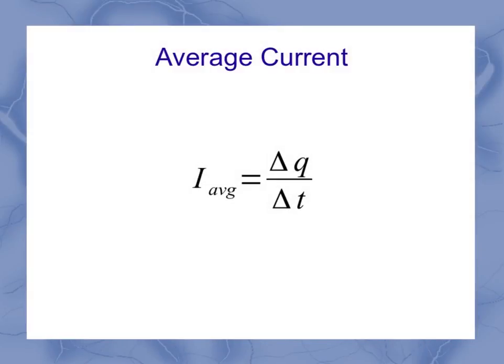In terms of an equation here, we've got some interesting symbols. So let's take a look at this. Delta Q is going to be the amount of charge that flows in a certain amount of time, delta T. And that gives me my average current.